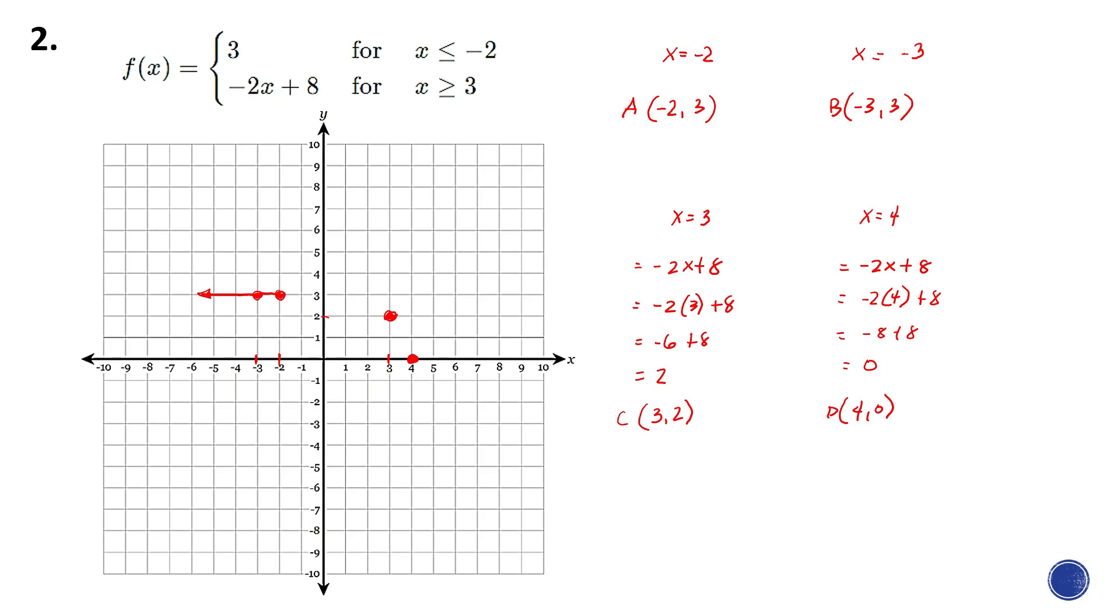The second point is always a closed circle. Then we connect the two points, and the arrow should be going from left to right because of the greater than symbol.